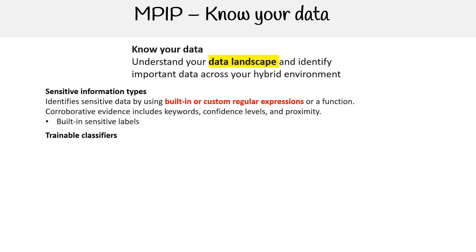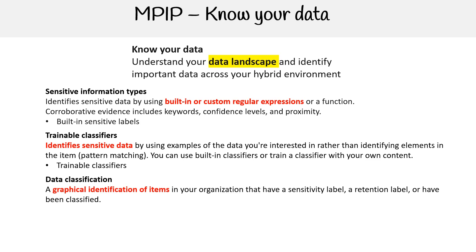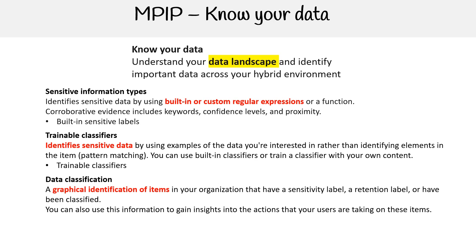Next are Trainable Classifiers, which identify sensitive data by using examples of the data you're interested in rather than identifying elements in the item — pattern matching. You can use built-in classifiers or train a classifier with your own content. For Data Classification, this is a graphical identification of items in your organization that have a sensitivity label, a retention label, or have been classified. You can use this information to gain insights into actions users are taking on these items — that's the Content Explorer and the Activity Explorer.